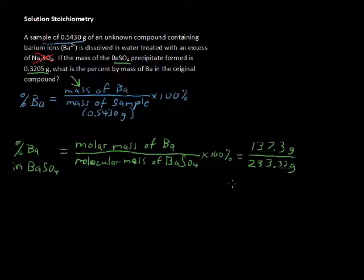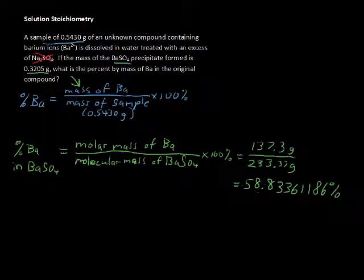Dividing those, then you get, I'll write this as a percent because I have the 100 percent written there. That's 58.83361186 percent. I'm hanging on to all these decimal places. I'm just going to round at the end. Now as a decimal, we'd move the decimal point back two places, but as a percent, we've got 58.8 percent.